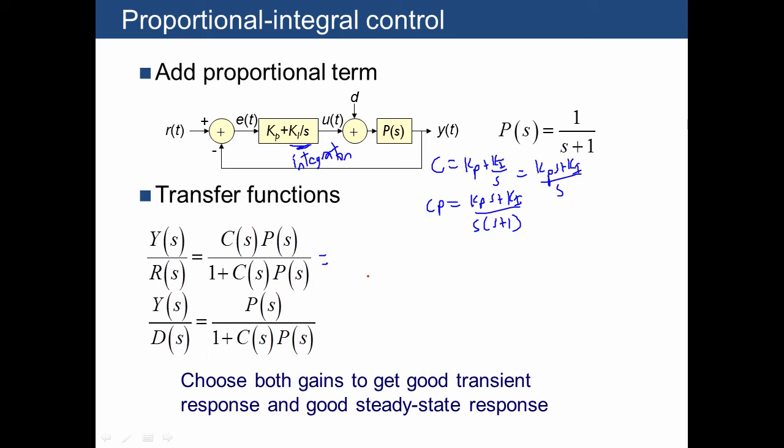I'm going to work this out pretty quickly just by multiplying top and bottom by S times S plus 1. So I'll just show you the answer. That's just going to be Kps plus Ki divided by S squared plus S plus Kps plus Ki. In other words, I'm going to collect the terms on the bottom and show that we have S squared plus Kp plus 1 times S plus Ki. And then notice that the DC gain for this system is just going to be equal to 1. So the effect of this integral control is it didn't affect the DC gain at all, as far as the reference is concerned.